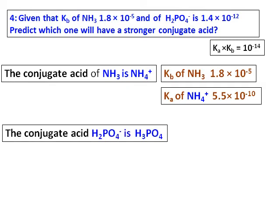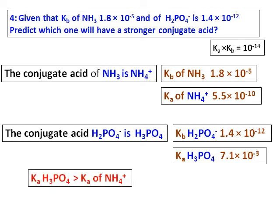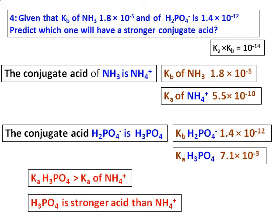Now, similarly, the conjugate acid for H₂PO₄⁻ is H₃PO₄. And from the Kb of H₂PO₄⁻, I can get the value of Ka of H₃PO₄, and that comes as 7.1 × 10⁻³. Now, compare the Ka of H₃PO₄ and Ka of NH₄⁺, and we realize that H₃PO₄ is a stronger acid than NH₄⁺.